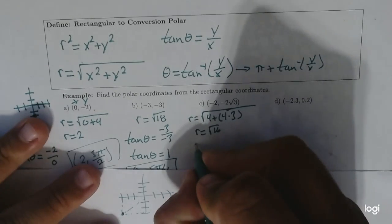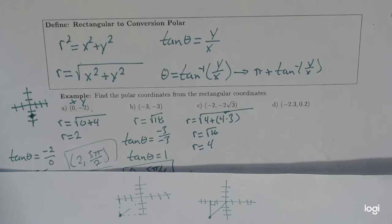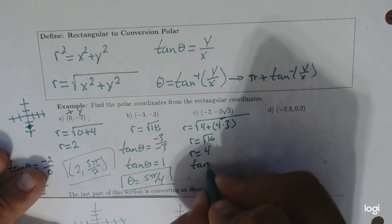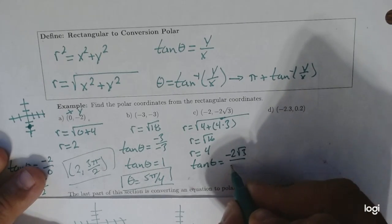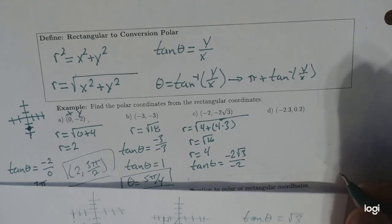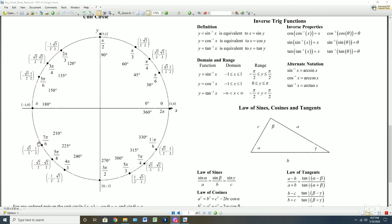We know the square root of 16 is 4, so the radius is going to be 4. Now that we have the radius, we go on to tangent. So tan theta is equal to negative 2√3 over negative 2, which simplifies to positive radical 3. Since we're in quadrant 3, we want to find which angle gives you radical 3 when you divide y over x — and it looks like the only one that works is 4π/3. So theta is going to be 4π/3.